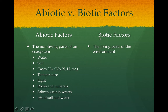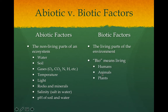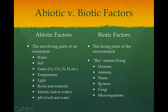The opposite of abiotic is biotic, which are the living parts. That would include all of the humans, animals, plants, bacteria, fungi, and all the microorganisms — anything that's living in the ecosystem is a biotic factor. All living things require other living things as well, mostly for food. Nothing that's alive can stay alive if it doesn't eat one of the other types of biotics.